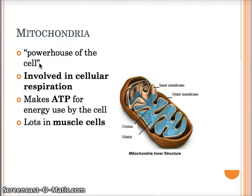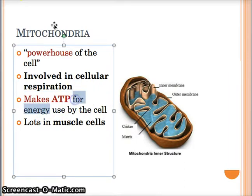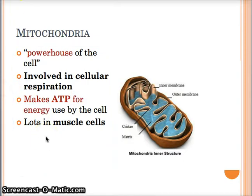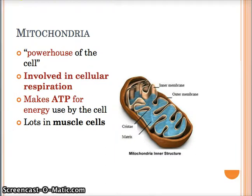Now the mitochondria is my favorite organelle - we're going to call it the powerhouse. The reason we call it the powerhouse is because it makes ATP, which is energy. Our muscles have a lot of mitochondria because they need lots and lots of energy to keep us going. You also need to write down that this is involved in cellular respiration - helping us break down stuff and also helping us breathe. Also in both plant and animals.